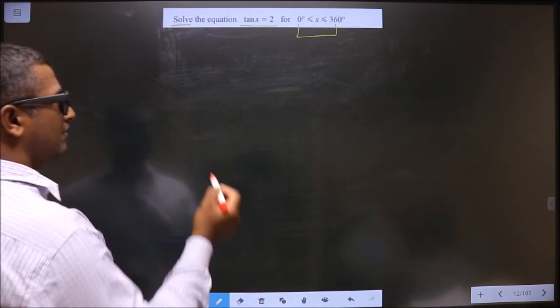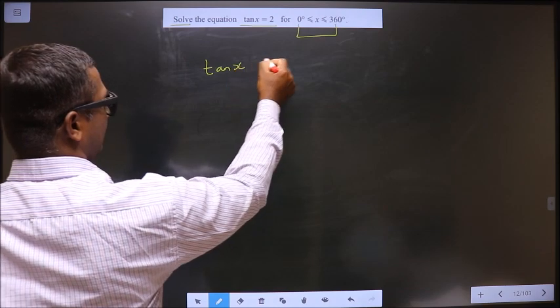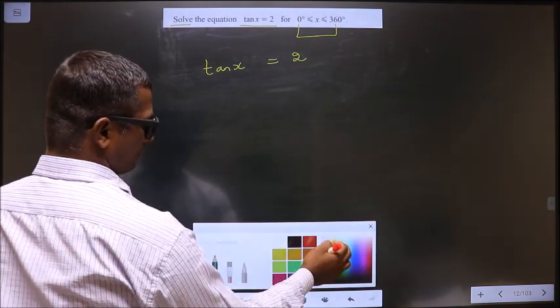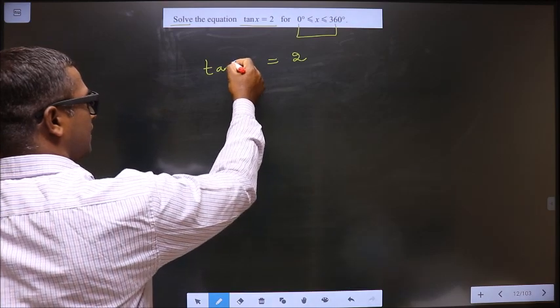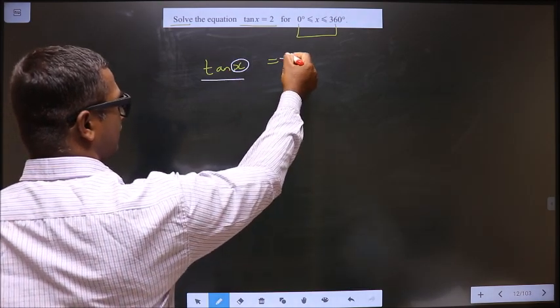First, the given equation is tan x equal to 2. Now to find the values for x, here we have tan x equal to positive.